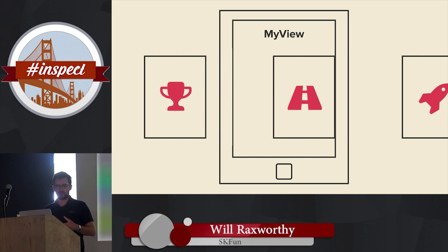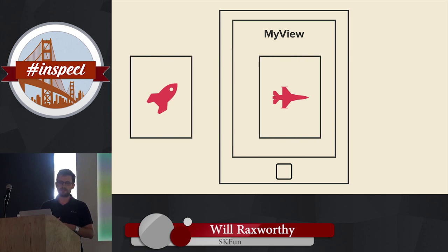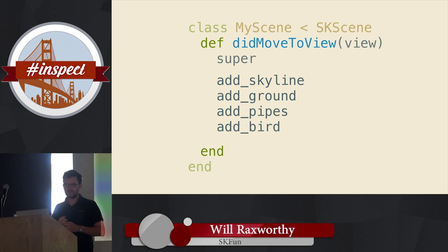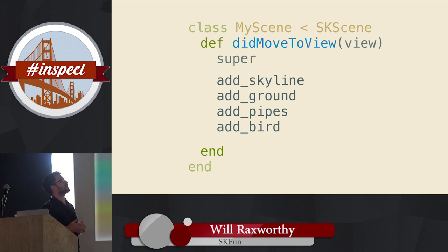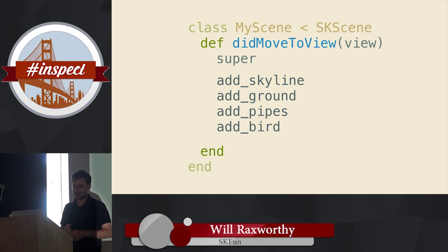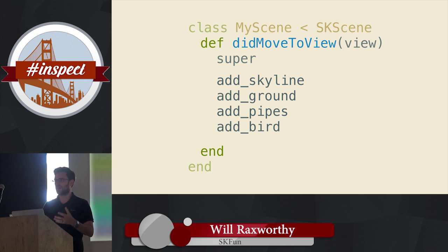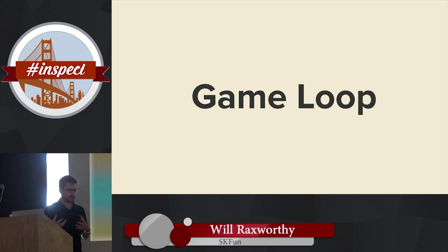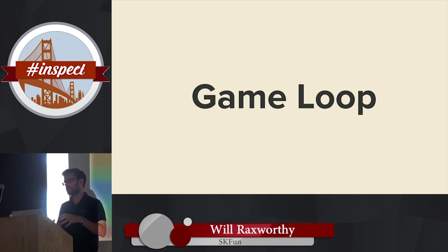The view is only responsible for transitions between and rendering of scene frames — think of it like a TV showing TV shows. The typical scene setup uses 'did move to view,' much like 'viewDidLoad.' You get the view that loaded the scene, then call basic methods to add nodes. Once the scene has moved to the view, SpriteKit kicks into gear what it calls the game loop.